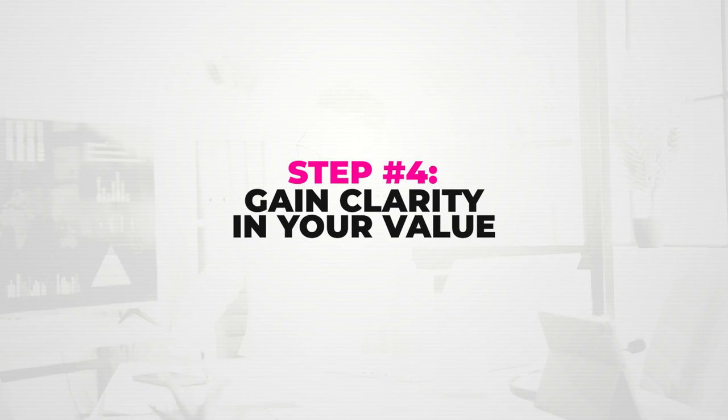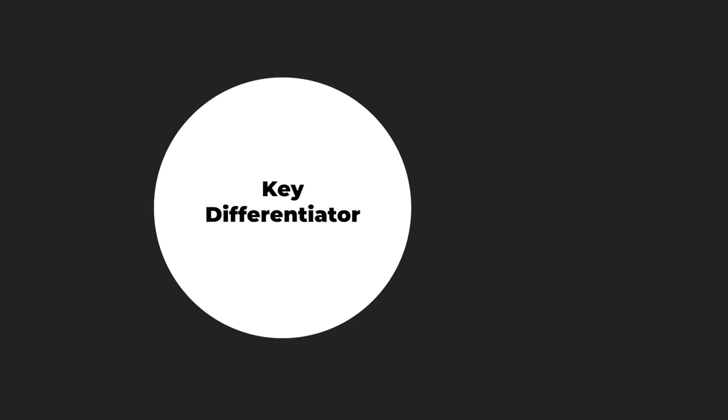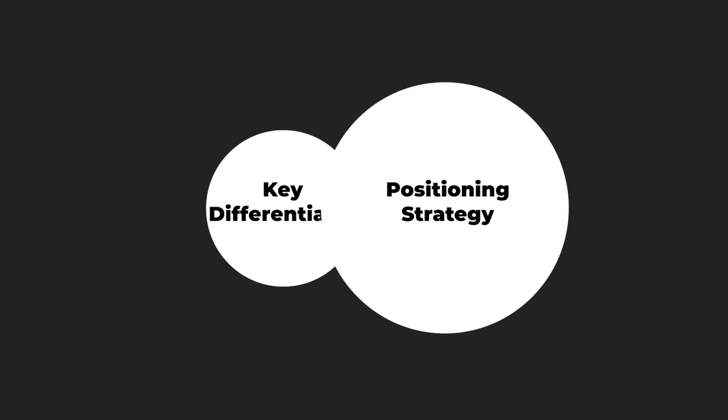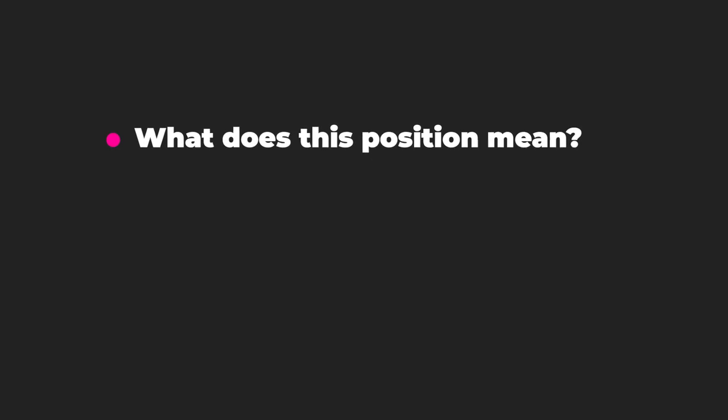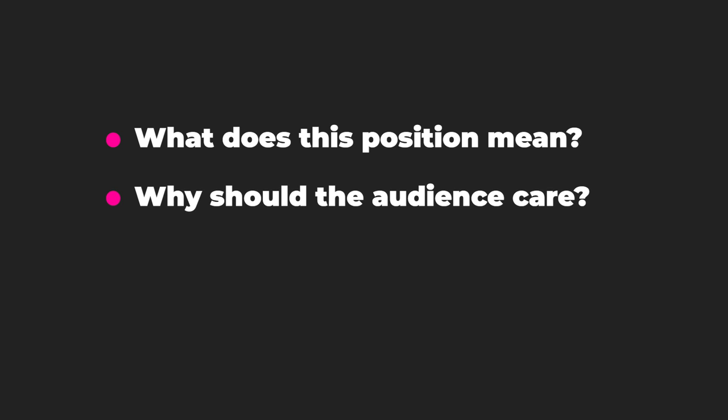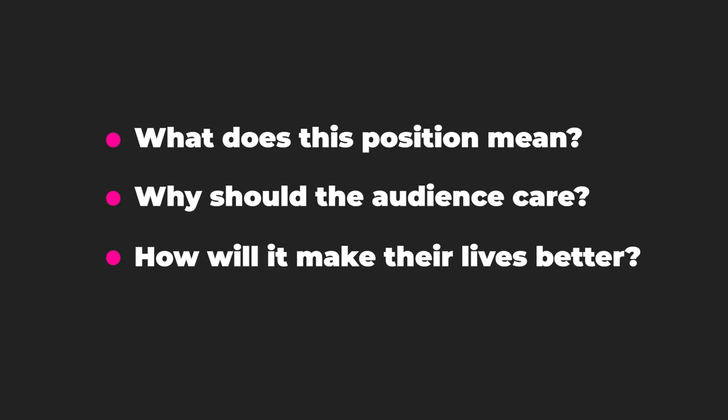Step number four: gain clarity in your value. The key differentiator and the positioning strategy mark the spot where the comprehensive brand image will stand. From here, the brand strategist works to clarify exactly what the value of that position is to the audience — what does this position mean, why should the audience care, and ultimately how will it make their lives better? That clarity in both position and value are the key ingredients to an effective communication strategy, and no message should be crafted without it.